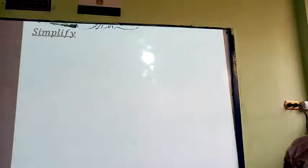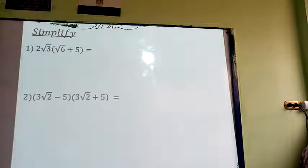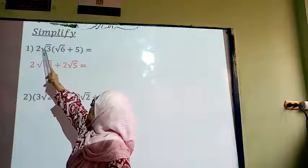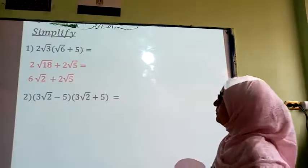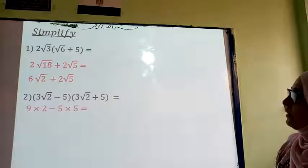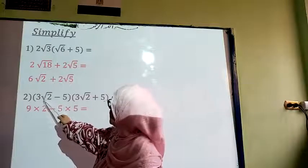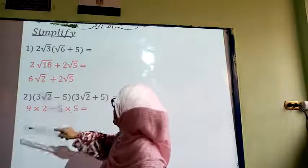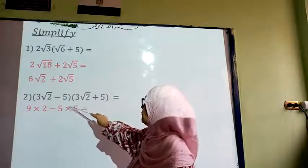Now another exercise — I think we are going to start and do it by yourself, then check the answer. We are going to distribute this number into the bracket, so I multiply these two numbers plus multiply these numbers. For this one I check the distribution: I multiply by this number, then multiply by this number, and negative 5 multiplied by 3·root 2, negative 5 multiplied by 5.